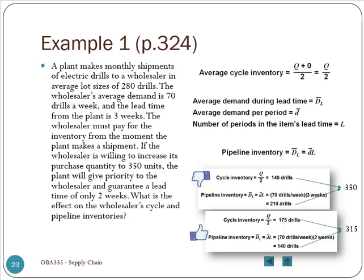Remember this number, 350, is an average. Sometimes they have more, sometimes they have less. On average, their inventory level is 350 every week.